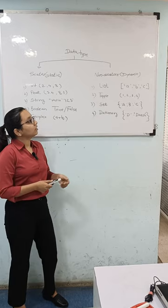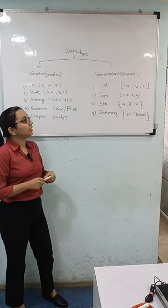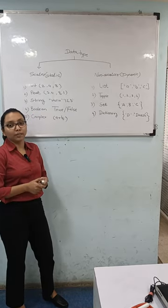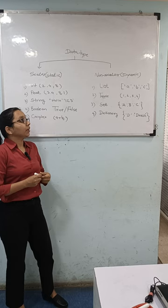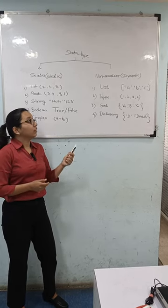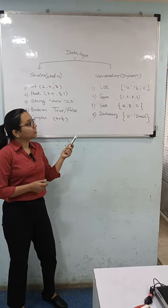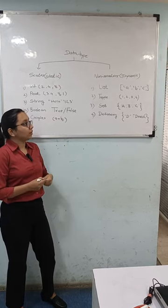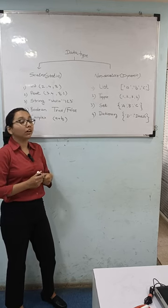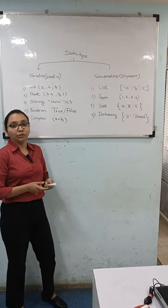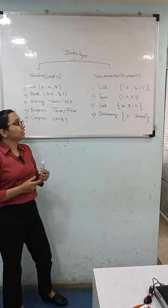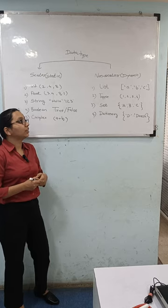The third is Set. Set is always declared in curly brackets. It is unordered and unindexed, and it is separated by commas. The set is used to represent unique values.